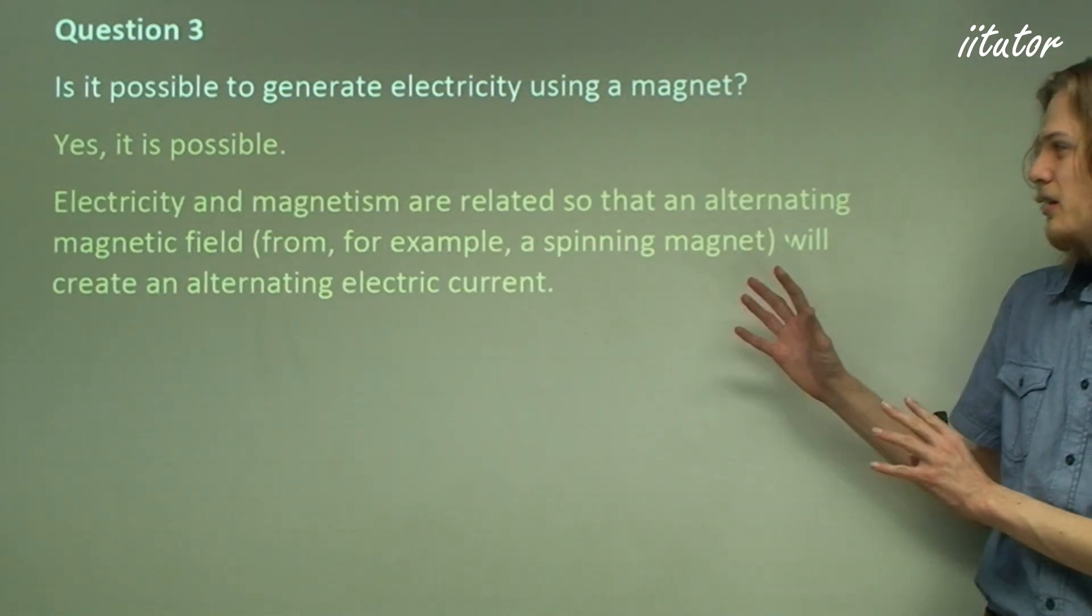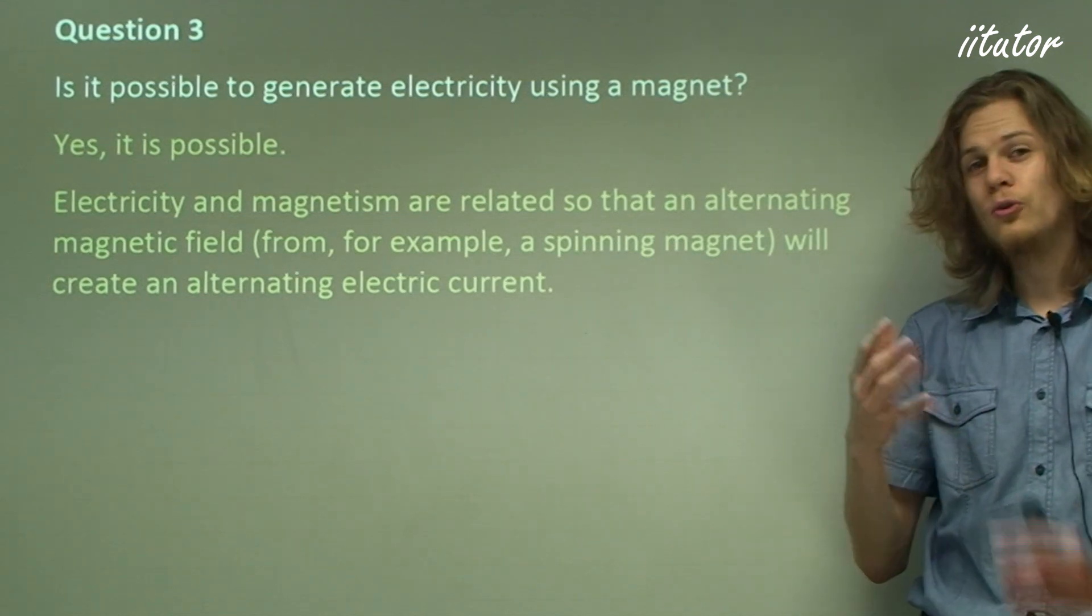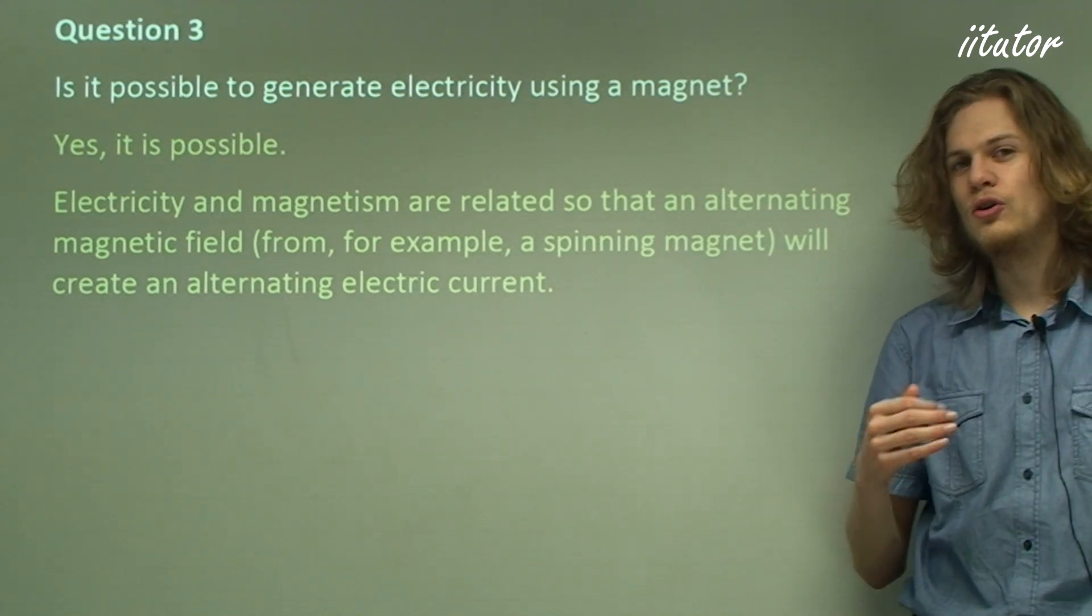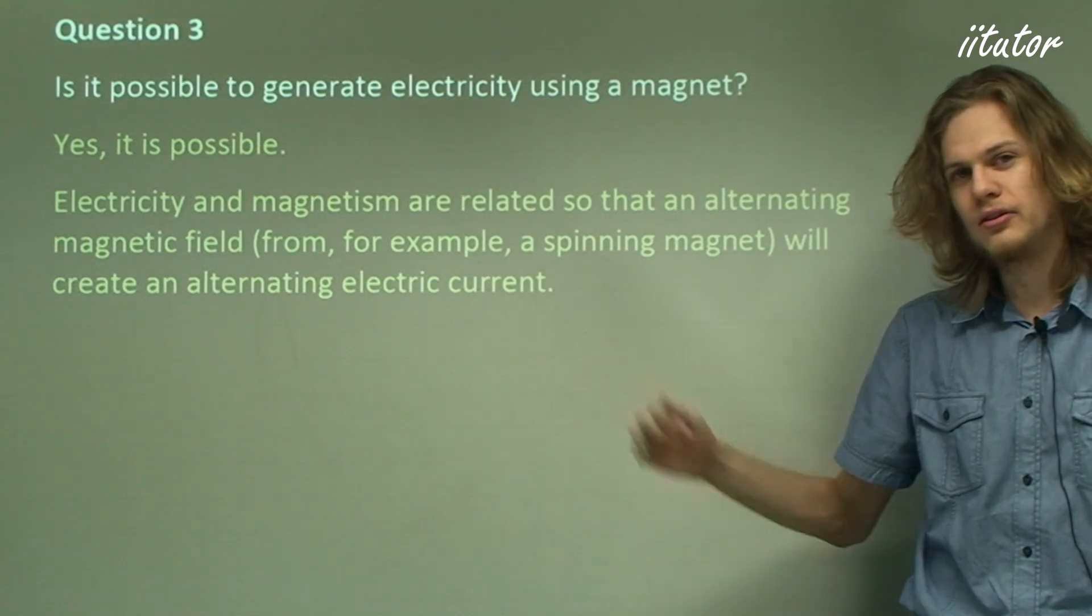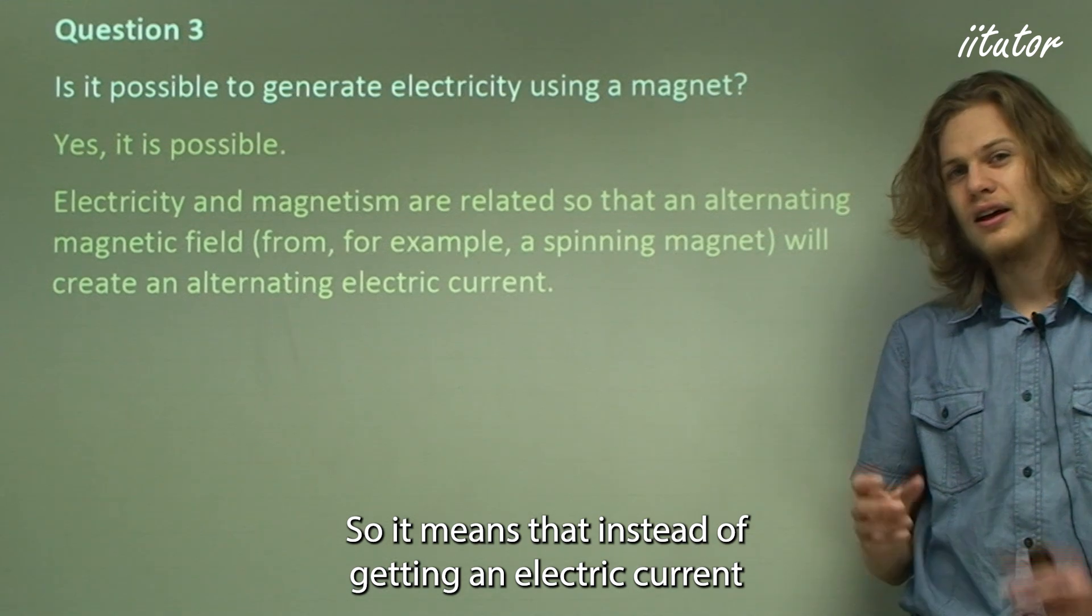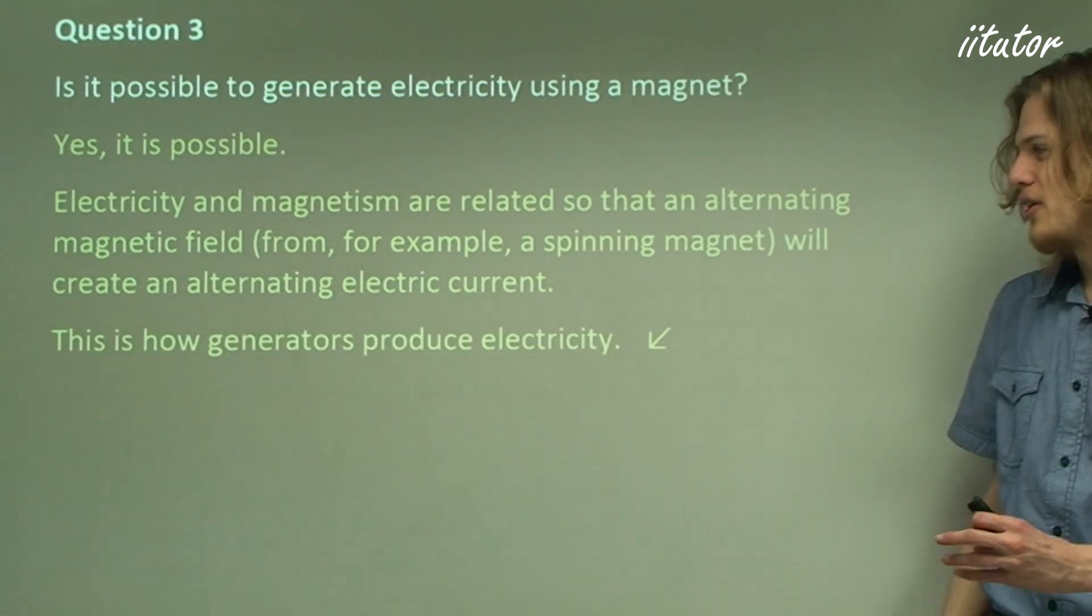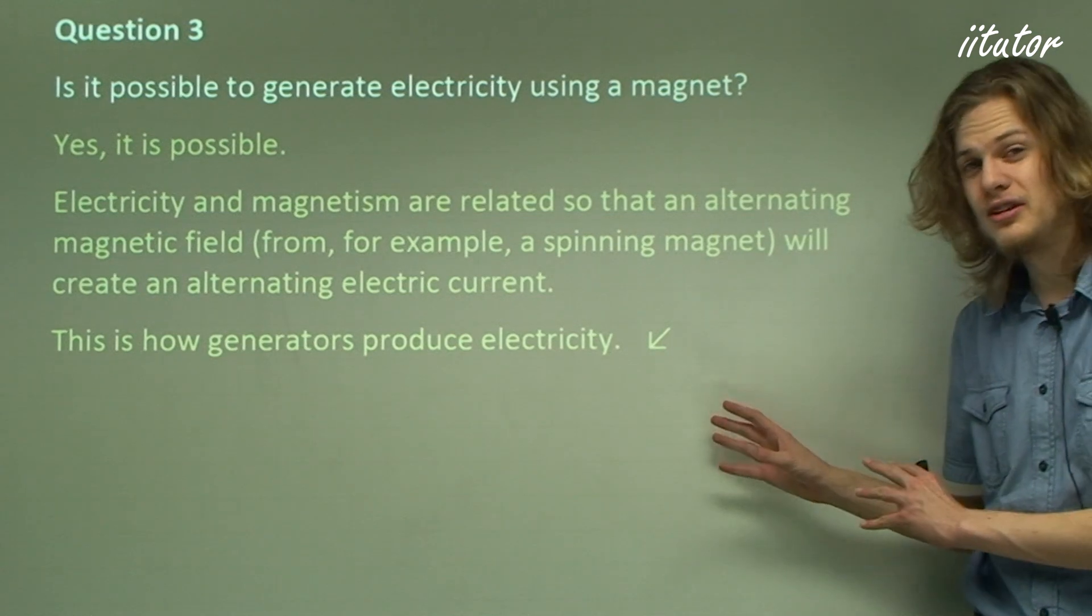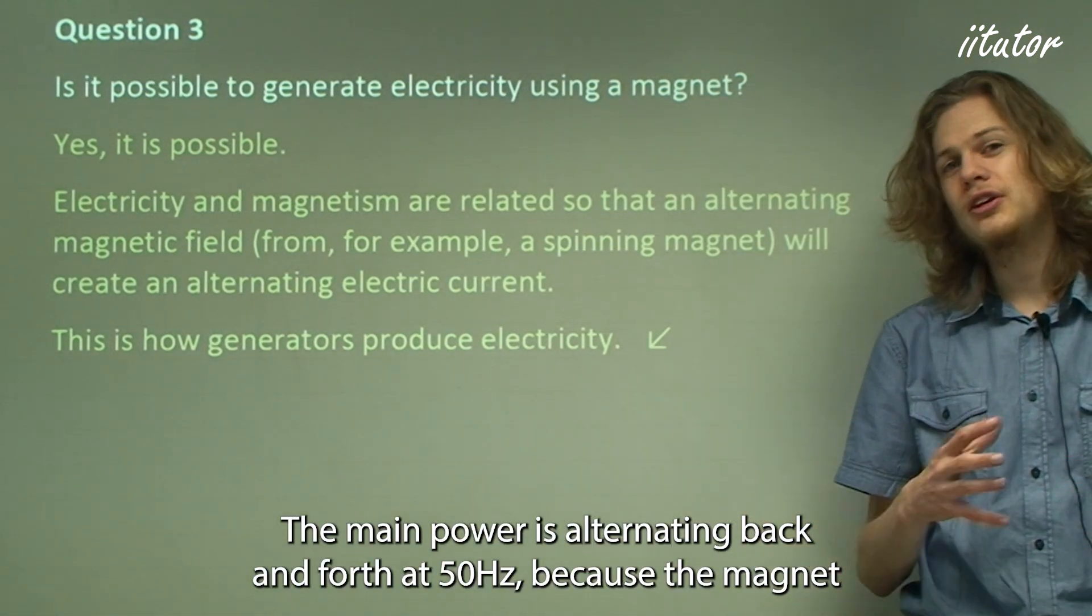So it turns out that electricity and magnetism are related so that a changing magnetic field, or an alternating magnetic field that's alternately going north-south-north-south, as in a spinning magnet, will in fact create an electric current that goes positive, negative, positive, negative. So it means that instead of getting an electric current going around in one direction, we'll get it moving back and forth. And in fact this is how generators produce electricity today. The mains power is alternating back and forth at 50 Hertz, because the magnet that produces the current is spinning at 50 times a second.